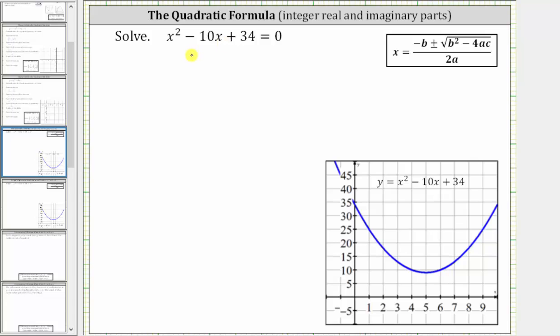However, if you look below, I also graph the corresponding quadratic function on the coordinate plane, and notice how the parabola does not intersect the horizontal or x-axis, which means there are no real x values that make the y value equal to zero. This means there are no real solutions to the given equation, and therefore we can expect complex solutions.